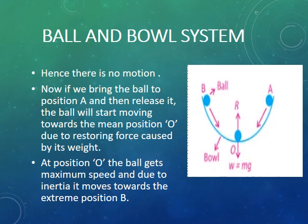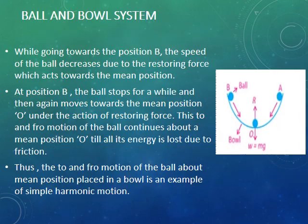While going towards position B, the speed of the ball decreases due to the restoring force which acts towards the mean position. At position B, the ball stops for a while and then again moves towards the mean position O under the action of restoring force. This to-and-fro motion of the ball continues about mean position O till all its energy is lost due to friction.